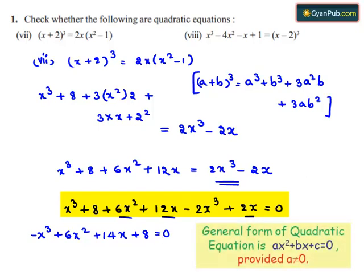We know that the general form of a quadratic equation is ax square plus bx plus c is equal to 0. The equation obtained is minus x cube plus 6x square plus 14x plus 8 is equal to 0. If we observe, the equation obtained consists of x cube term, but the quadratic equation will not have x cube term. It will have only x square term. We can say that the given equation is not a quadratic equation.